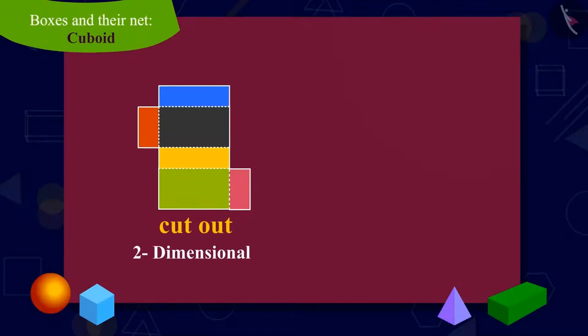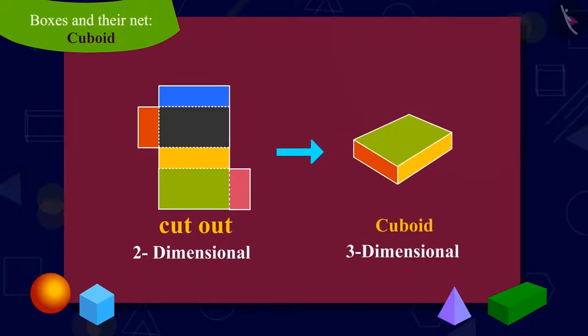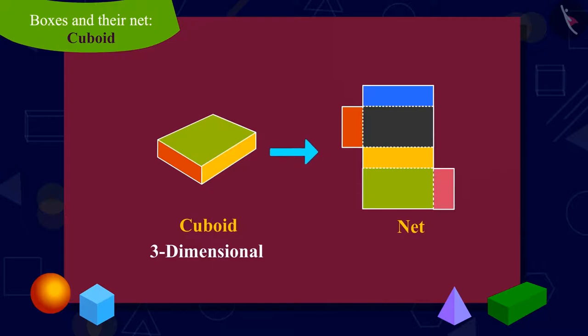Do you know that two-dimensional shapes, like the cutouts of this cardboard, which when folded, we make three-dimensional shapes, like the cuboid. This is called the net of the shape.